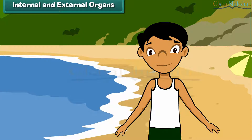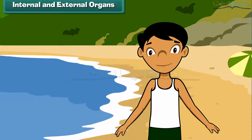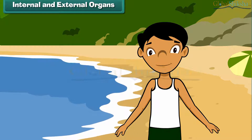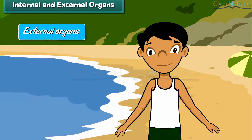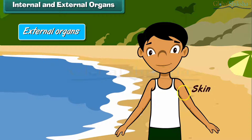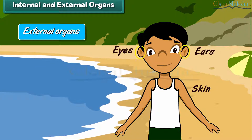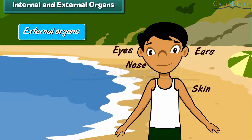Internal and external organs: The organs that are located on the exterior of the human body and are visible to the human eye from outside are called external organs. For example, heart, liver, kidneys, brain, bones, etc.